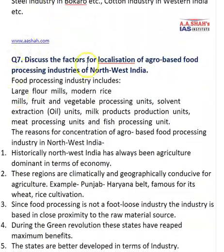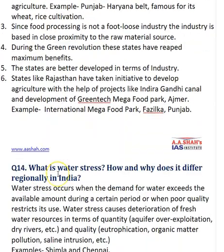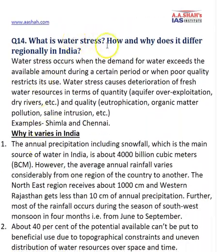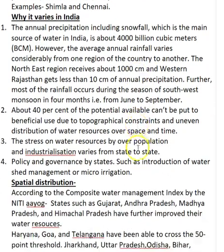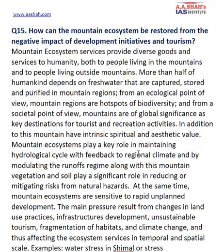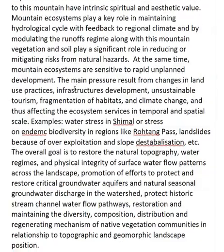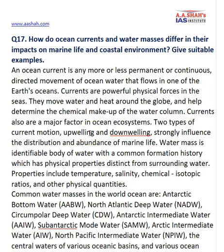The factors of localization question was at a medium level of difficulty. The water stress question would have been much easier if you had read the NITI Aayog Water Management Index report; without it, candidates would write a very generalistic answer that would not fetch good marks. The mountain ecosystem question was very general and easy. The ocean current question was somewhat technical and the most core geography question of the paper. Overall, the paper was not very difficult.